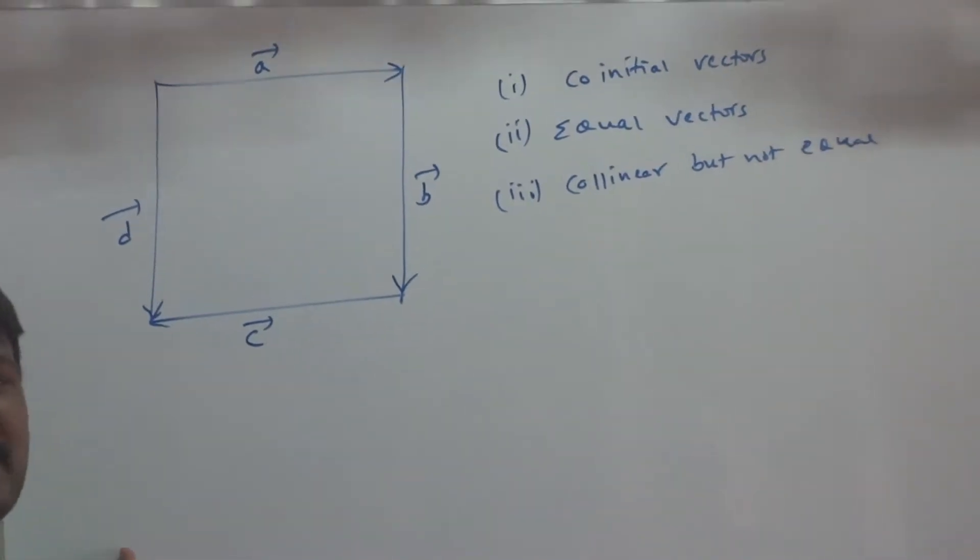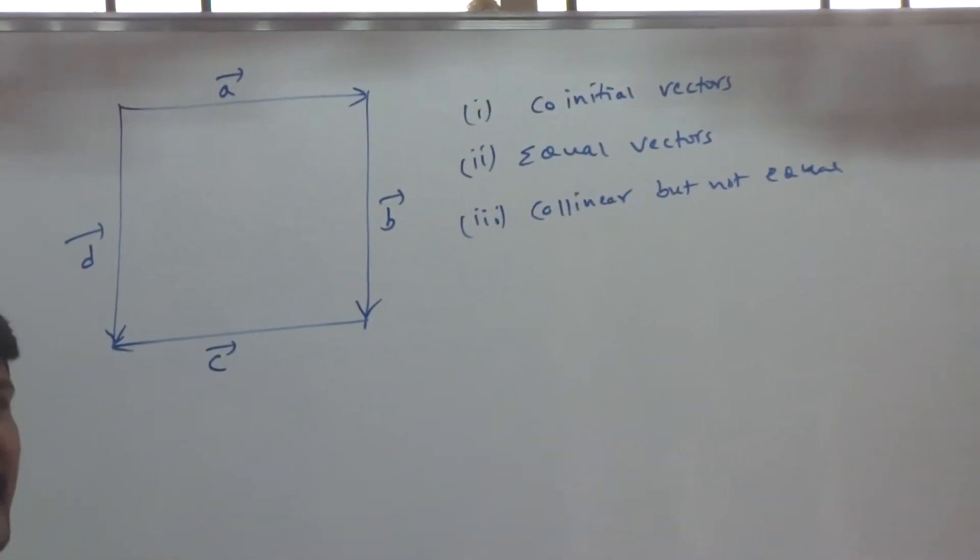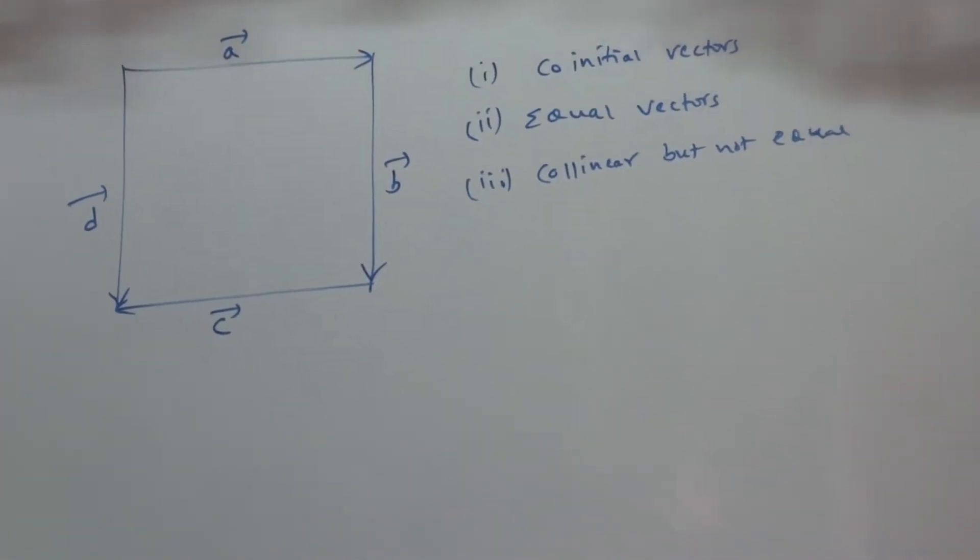What is meant by co-initial vectors? Initial point is same, then we can call it as co-initial vectors.